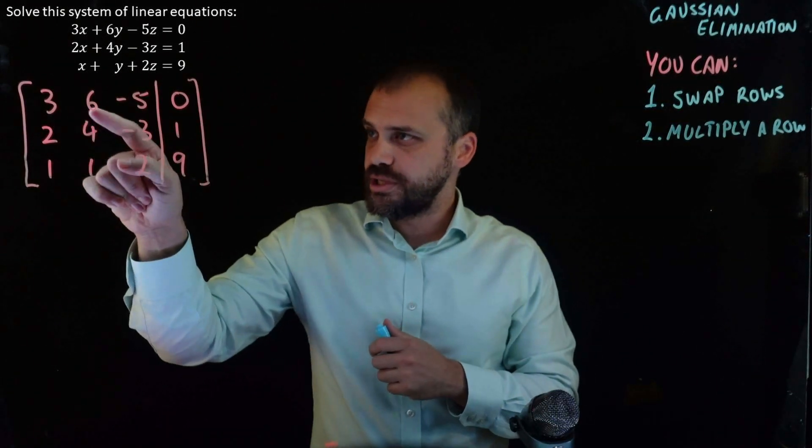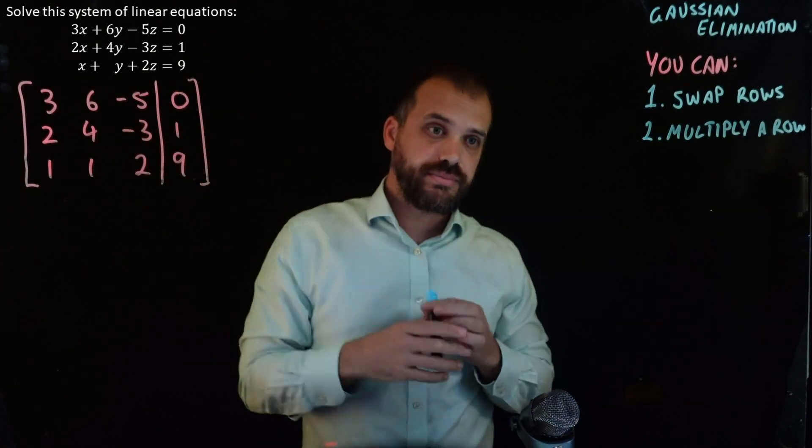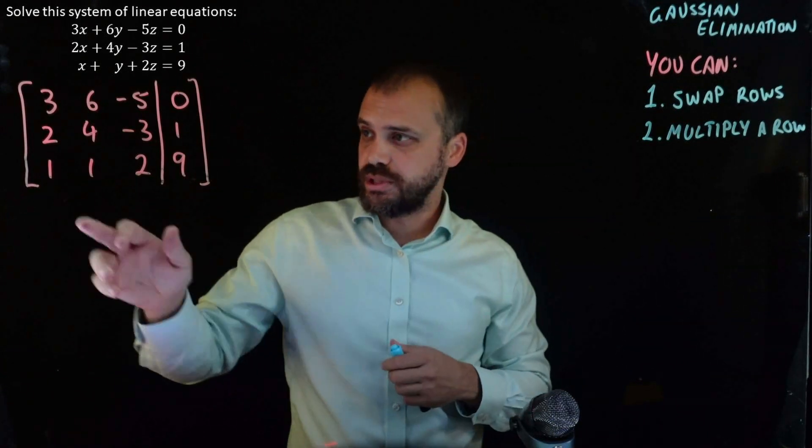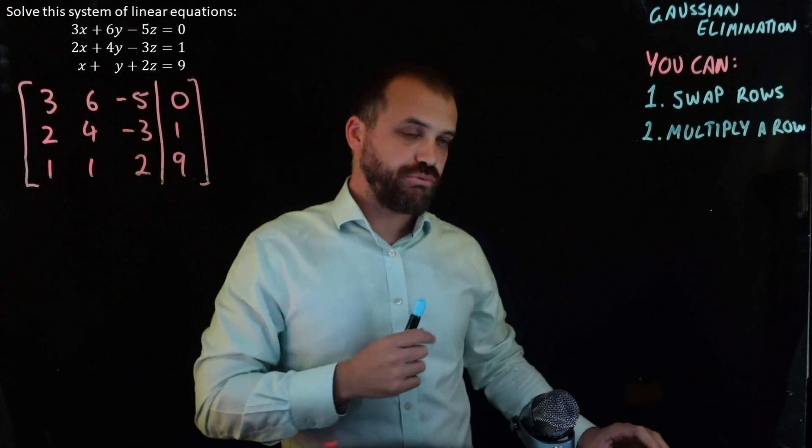You can multiply a row. So this row, 3, 6, negative 5, 0, I can multiply it by 2 and make it 6, 12, negative 10, 0. I could multiply this by negative 5 if I wanted to. It'd be negative 5, negative 5, negative 10, and negative 45. I can multiply a row. And finally, we can subtract a multiple of a row from another row.